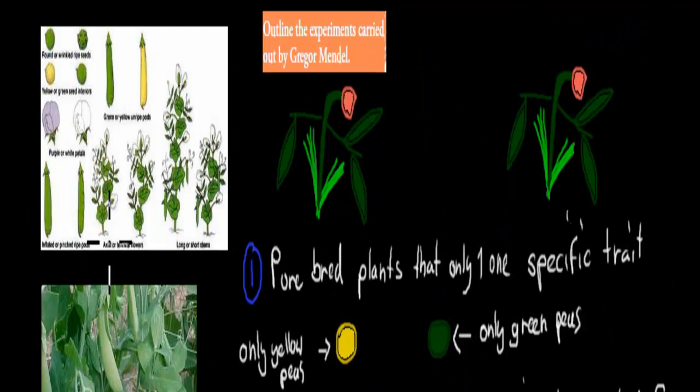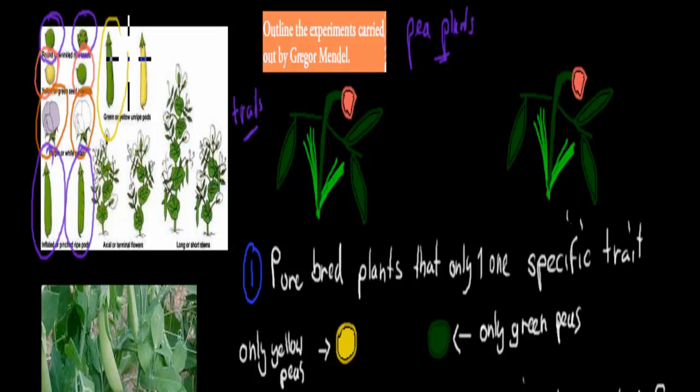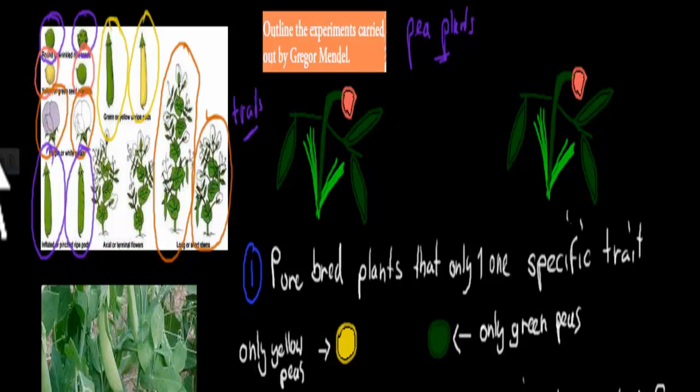So what he did is a couple of steps. First, he looked at lots of different things, different traits. And the traits he looked at were from pea plants. He looked at round versus wrinkled peas. He also looked at yellow versus green, pink flowers versus white flowers, normal inflated pods versus constricted pods, green pods versus yellow pods, and short pea plants versus long pea plants.